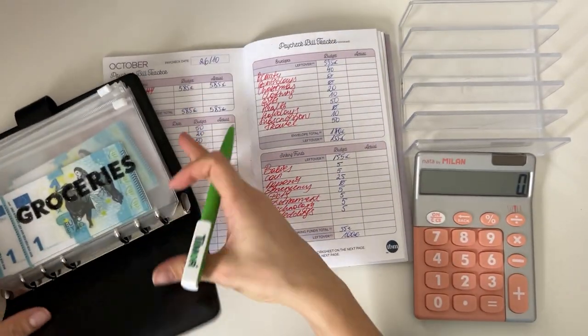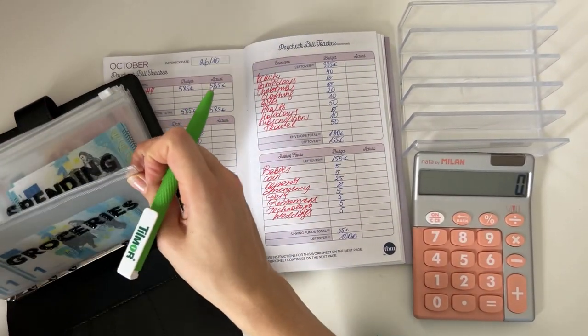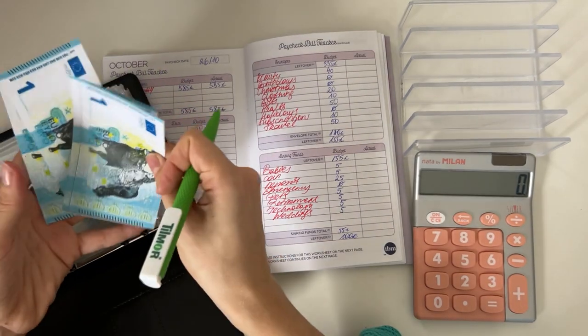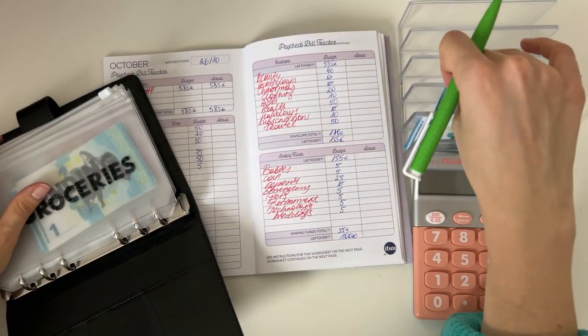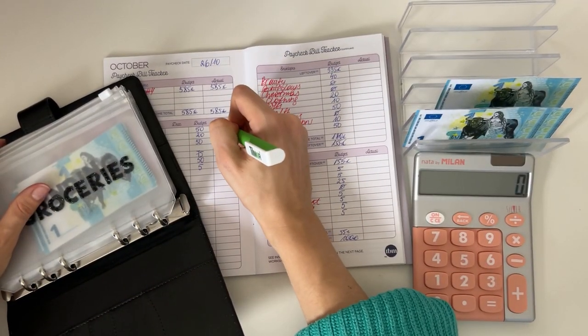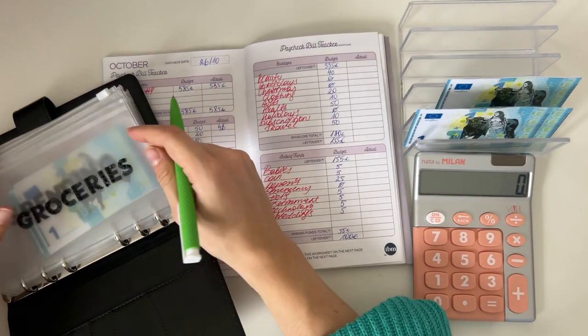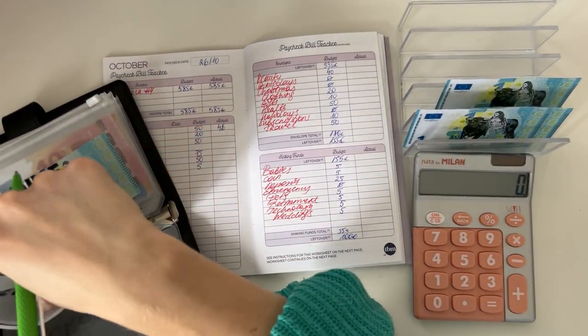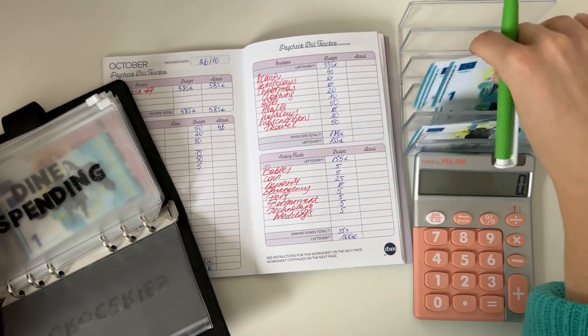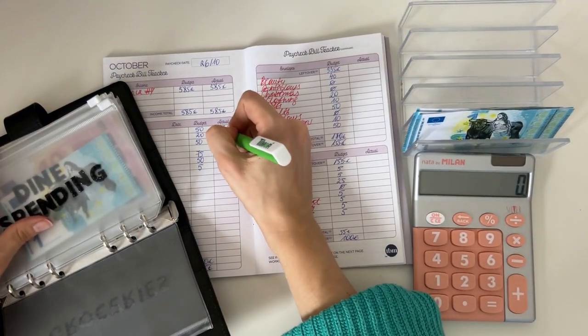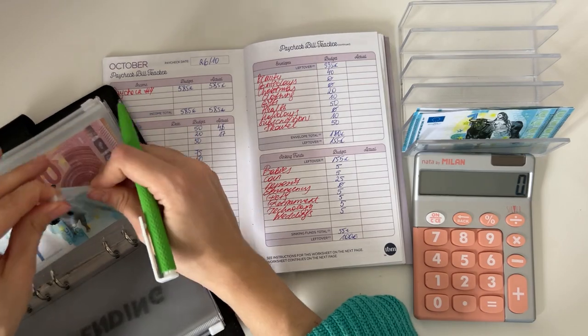Groceries has a rollover of one, two, three and four, so we spent 46 here. Spending has a rollover of one, two and three, so we spent 17 here.